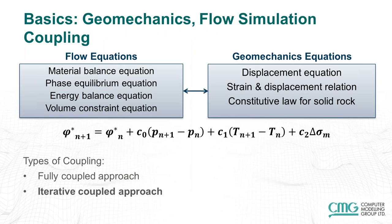What does coupling of geomechanics and flow simulation mean? When you solve flow equations — material balance, phase equilibrium, energy balance, volume constraint — these give you solutions for pressure, temperature, and so on. Geomechanics equations then use these pressures and temperatures to calculate displacements, strains, and stresses. In turn, geomechanics calculates the change in porosity: porosity at any given time step equals porosity at the previous time step plus the effect of pressure, plus the effect of temperature, plus the effect of stresses. Just as geomechanics needs information from the reservoir side, the reservoir also sometimes needs information from geomechanics. This communication between them is called coupling.